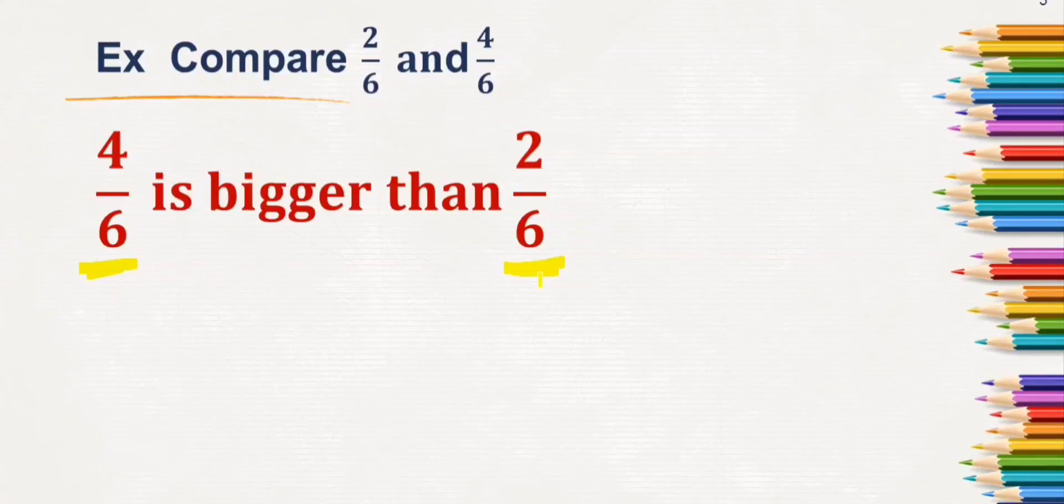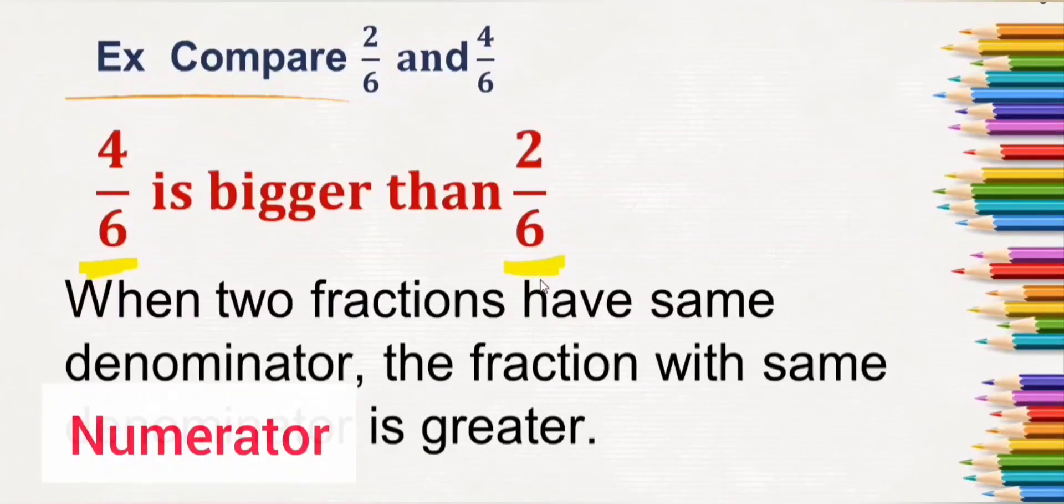So here the denominators are the same but the numerators are different. So when two fractions have the same denominator, the fraction with greater numerator is greater. Which means we have to compare between the numerators, that is 4 and 2. When you compare between 4 and 2, which is bigger? Yes, 4 is greater than 2. So 4 by 6 is greater than 2 by 6.